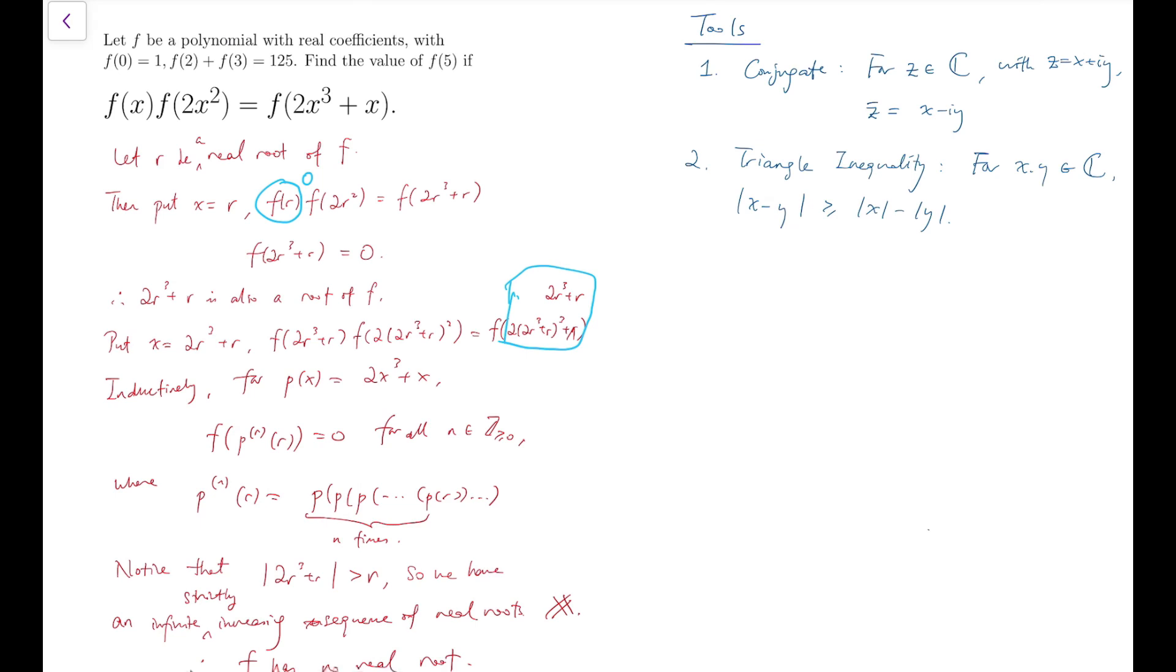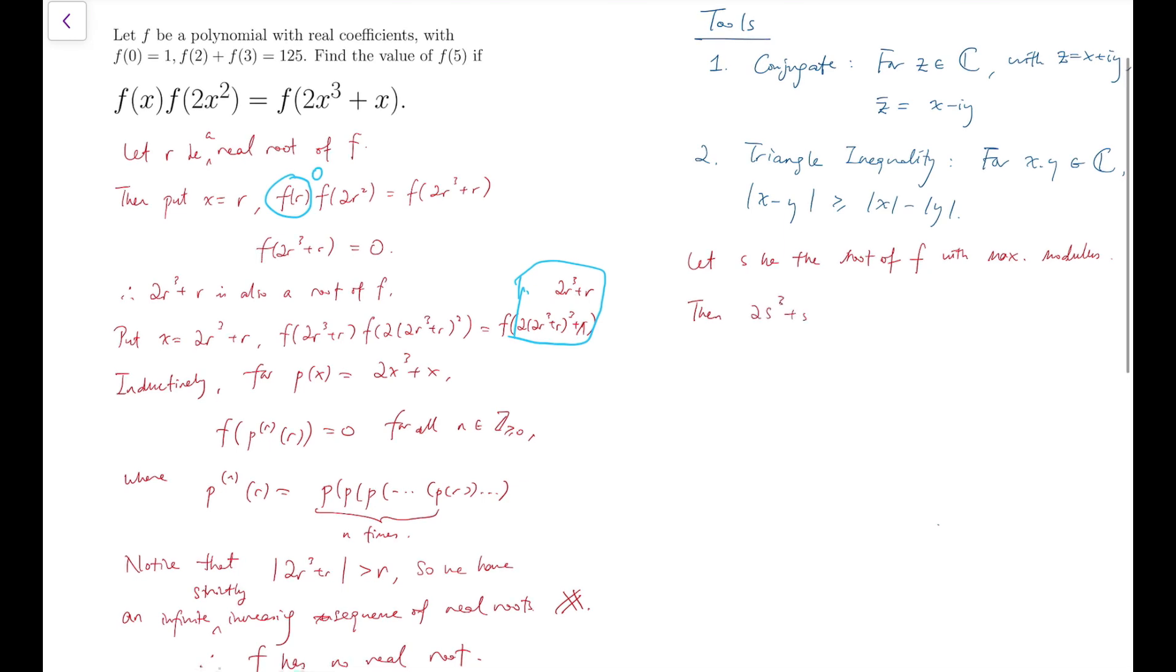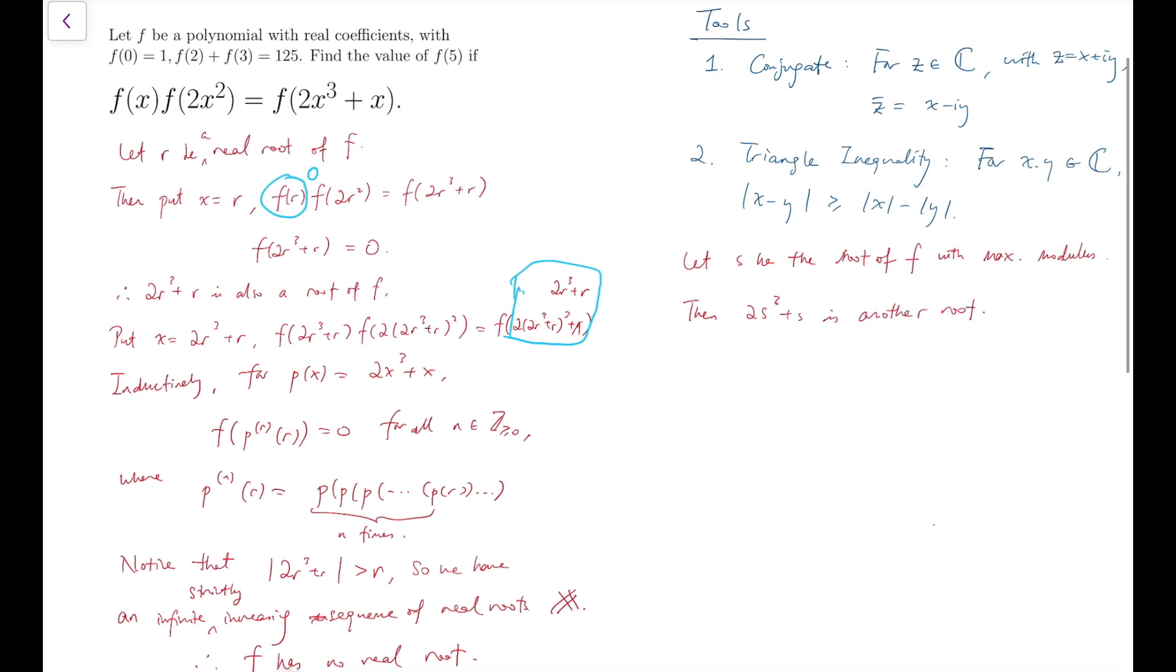So let me consider the complex root with the largest modulus. Then we know that from results above, 2s³ + s is another root. Before calculating the modulus, notice that because we have f(0) = 1, so that means f(0) is actually the constant term. So we can say that the product of the roots must be either 1 or minus 1.